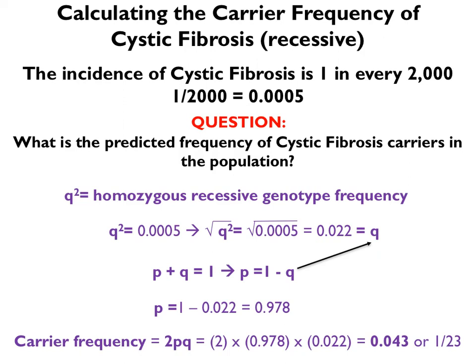Or expressed as a fraction, that's 1 in every 23 individuals. This means that 1 in every 23 individuals from this population are heterozygous for the cystic fibrosis allele — what we would call carriers. Which is pretty common: 1 in 23 people carrying this allele that they can pass down, which causes cystic fibrosis, is relatively common.